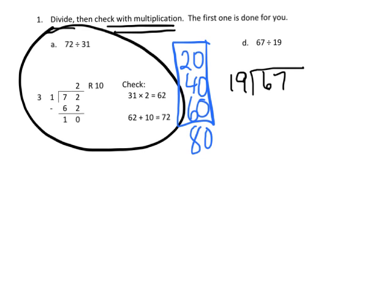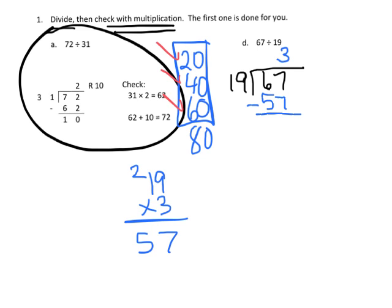Let's see if that works. I'm going to put my 3 here, and over here on scratch paper I'm going to do 19 times 3: 3 times 9 is 27, carry the 2. 3 times 1 is 3, plus 2 is 5, so 57. That does not go over 67 so we're good. 3 is a good quotient and we can subtract and we get 10 left over. So our answer is 3 remainder 10.